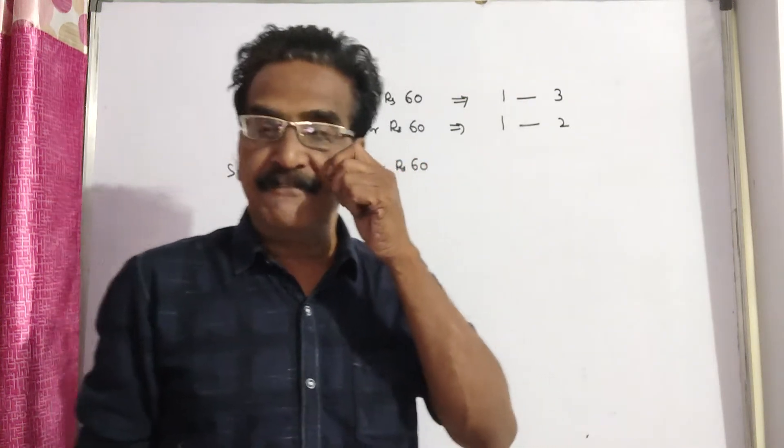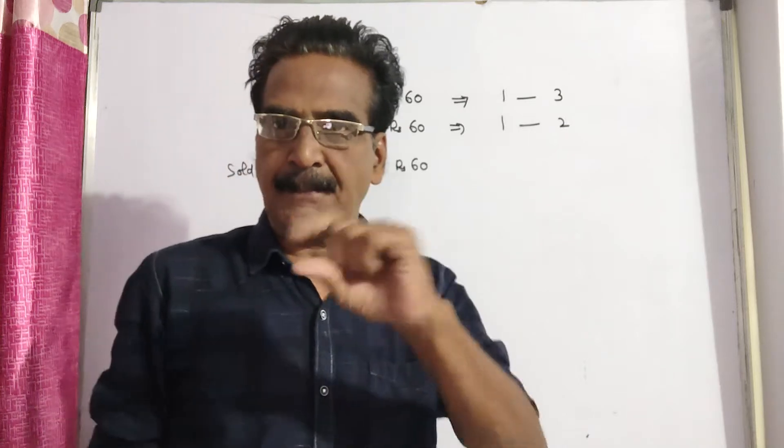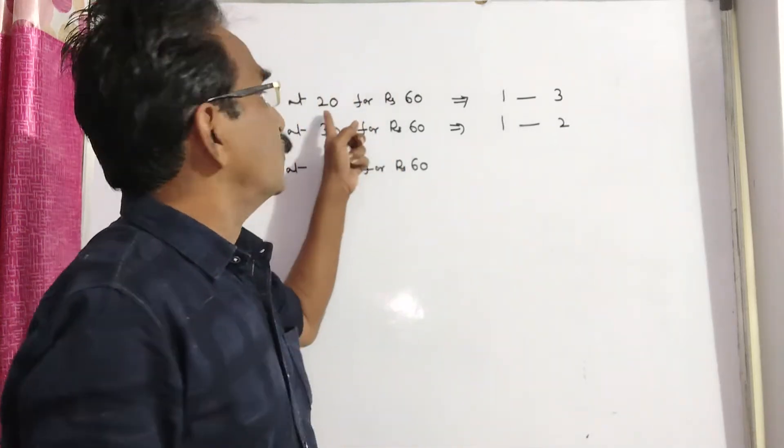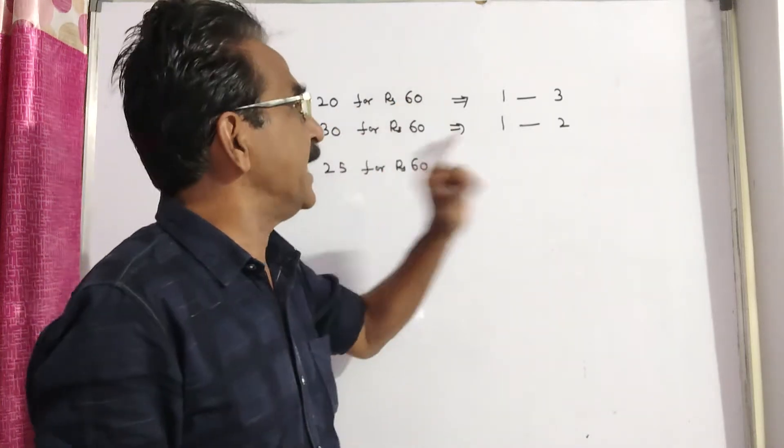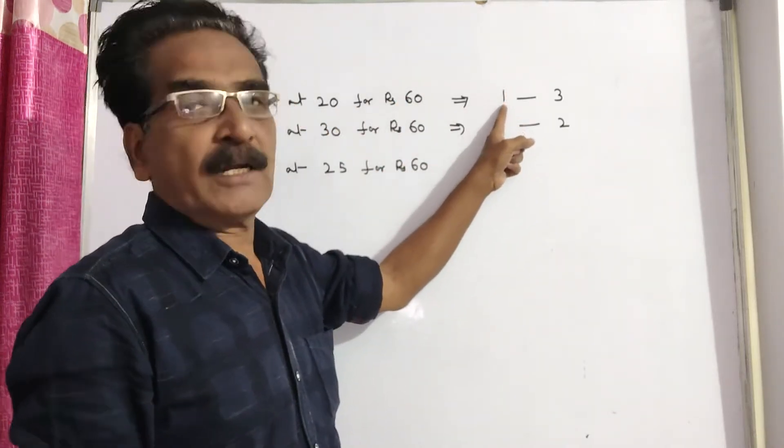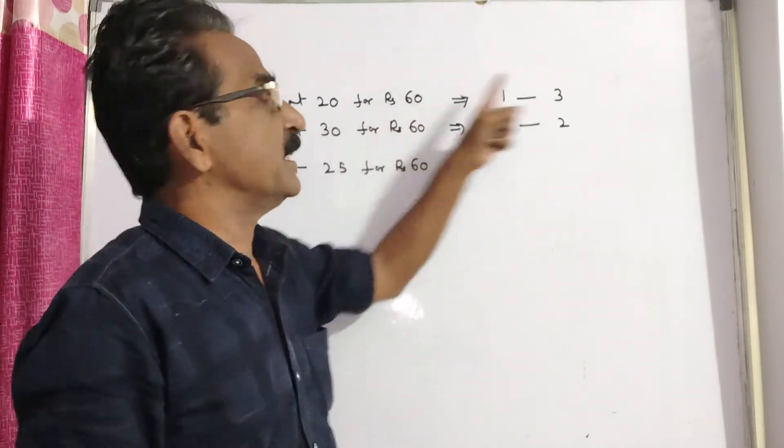Hi friends, good morning. Please look at the next problem in profit and loss. A man buys a certain number of oranges at 20 for Rs. 60. That means 20 oranges for Rs. 60, so each orange costs 60 divided by 20, that is Rs. 3.